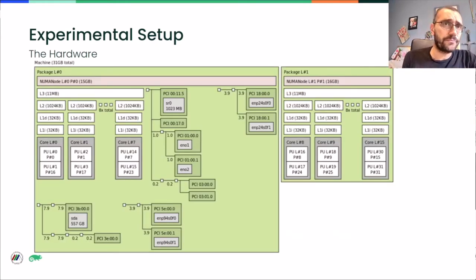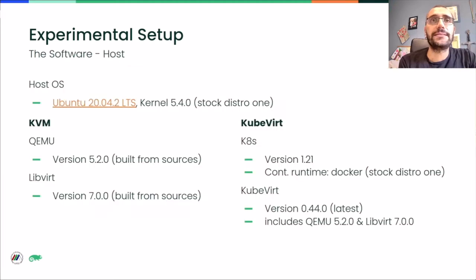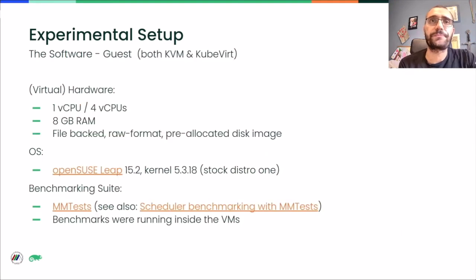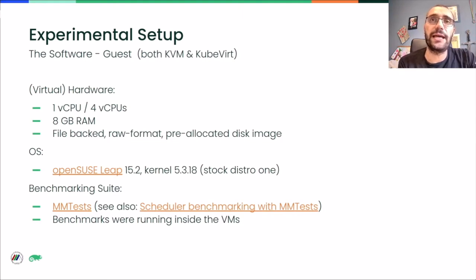As host, we used Ubuntu LTS. We used the latest available KubeVirt release, which was 0.44, which includes QEMU 5.2 and LibVirt 7. For the KVM experiments, we built from sources and used the very same versions of those software components. We ran our experiments inside a one vCPU VM and then repeated them inside a four vCPU VM. The VM had eight gigabytes of RAM in both cases and was running openSUSE Leap 15.2.